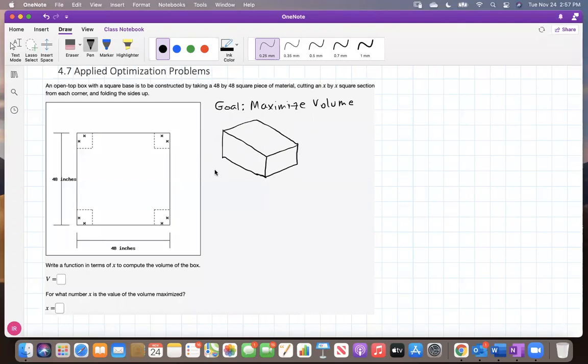What is important here is to notice that once you construct the box, the height of the box, since we're going to fold this up, should be equal to x. Also notice that the width should be 48 minus x here, minus x here, so 48 minus twice x. Similarly, the length 48 minus x here, minus x here, 48 minus twice x.